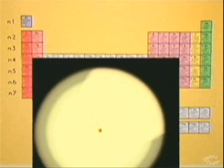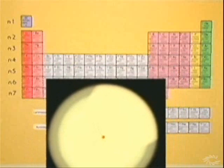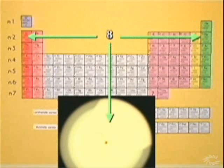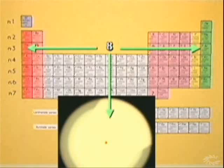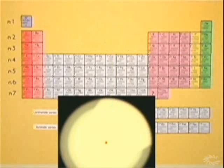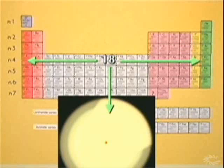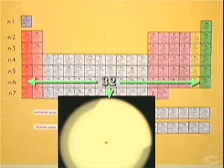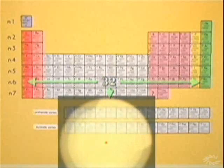Notice anything? The number of electrons that can be accommodated in the energy levels is the same as the number of elements in the periods of the periodic table. The table reflects the structure of the atoms of elements. This is why the table is so useful.